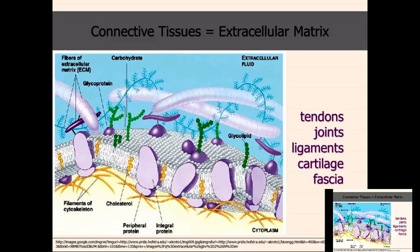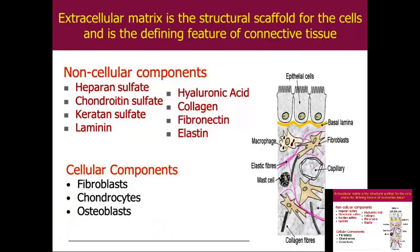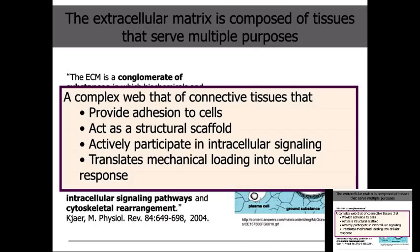The ECM is found in tendons, joints, ligaments, cartilage, and fascia. The extracellular matrix is the scaffolding for cells and is the defining feature of connective tissue. There are non-cellular components — glucosamine, chondroitin sulfate, hyaluronic acid, collagen, elastin, fibronectin — and cellular components: fibroblasts, chondroblasts, osteoblasts. The ECM provides adhesion to cells, acts as scaffolding, participates in intracellular signaling, and translates mechanical load into a cellular response.